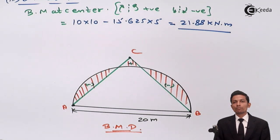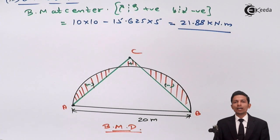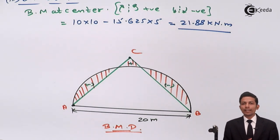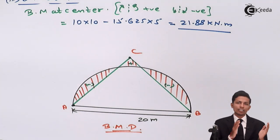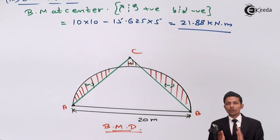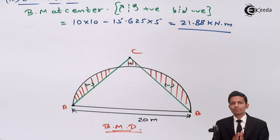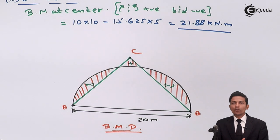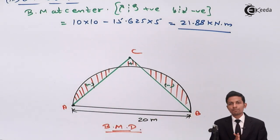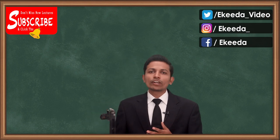This topic is quite interesting and you can score marks in exams because it is very simple. First find the reactions, then find the horizontal thrust H using the integration formula. For M·Y·dX: take sections from 0 to 10 from A and 0 to 10 from B, add both. Find Y²·dX using 0 to L, put values in a calculator, and check with the standard formula. For the bending moment diagram, since it's a point load, bending moment is non-zero only at the crown, and both ends are zero. Subscribe to the E-KIDA channel.